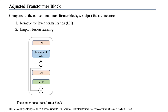We also propose a new transformer block to stabilize and improve the training process. As shown in the left figure, the general transformer architecture contains two submodules: a multi-head self-attention module and an MLP module, with layer normalization and residual connections applied for each. However, due to many invalid tokens, layer normalization makes training very unstable, so we remove it in our design. We also find residual connections are not effective due to the large number of invalid tokens, so we concatenate features instead. The final architecture of our adjusted transformer block is shown on the right.